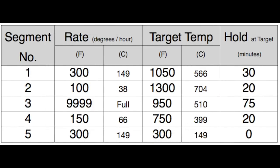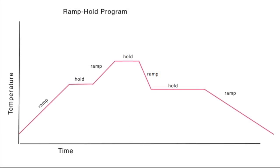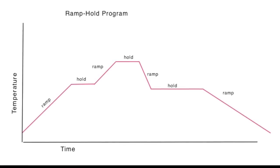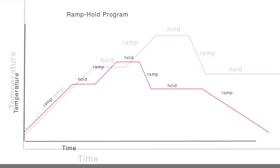These are the numbers we're going to enter. This is a firing schedule. It describes what's known as a ramp hold firing program. This graph illustrates why it's called a ramp hold program.